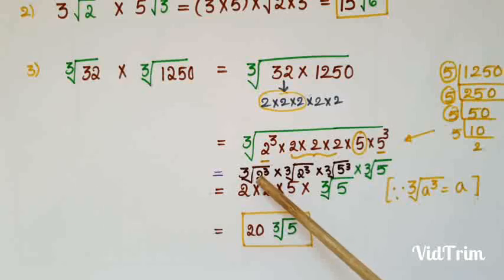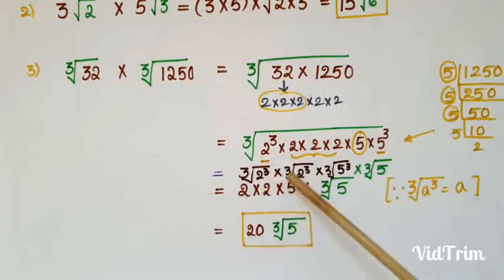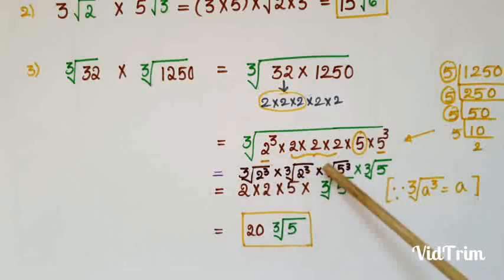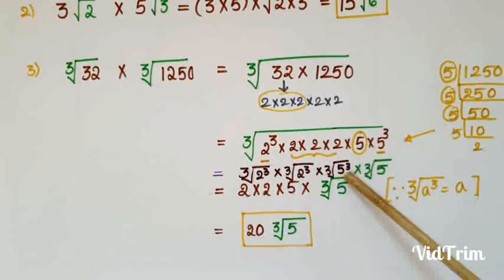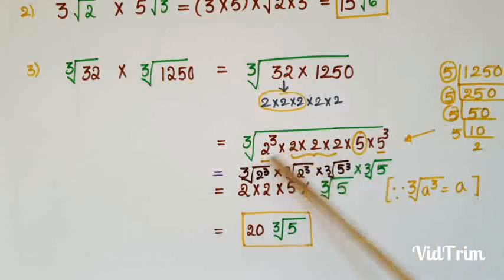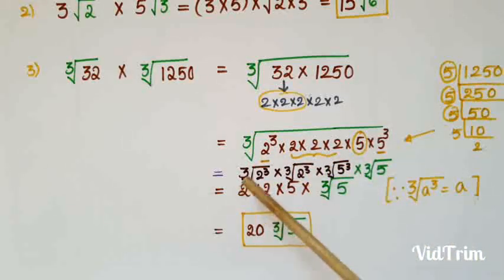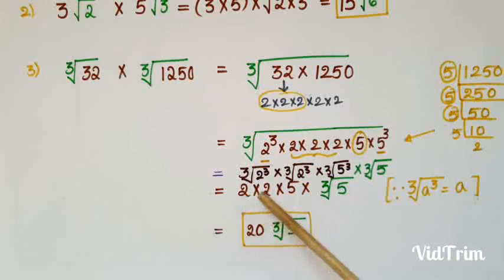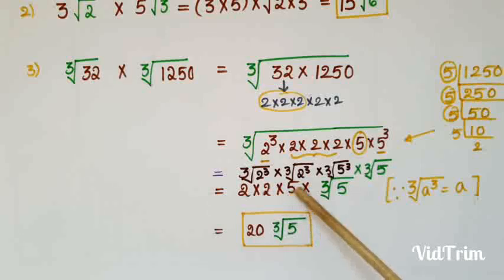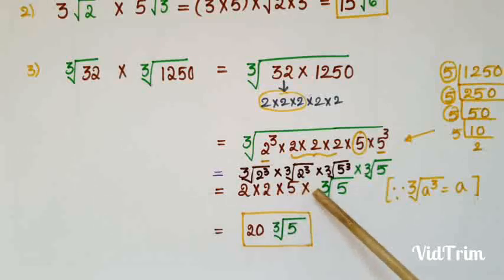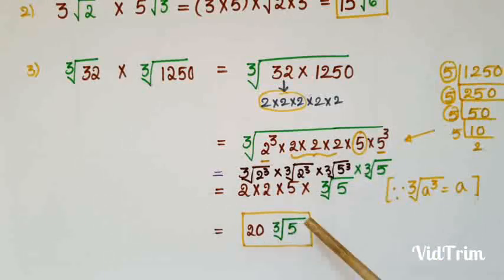There is another cube number 2³, so write ∛(2³) × ∛(2³) × ∛(5³) × ∛(5). ∛(2³) = 2, so we get 2 × 2 × 5 × ∛5 = 20∛5.